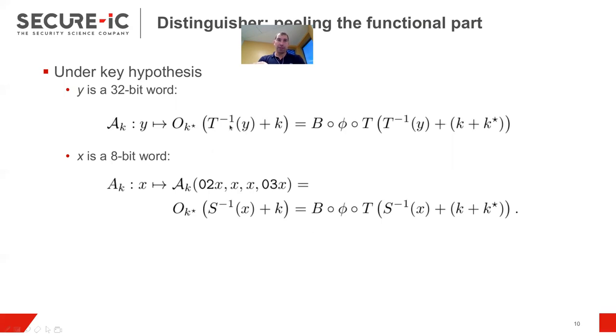So instead of taking the input as a Y, which is the image under the mix columns, we can just provide directly a byte here and map it to the image of the mix columns. So in which case, the function we need to assess becomes kind of clear because you see, we explicitly see the difference between the key guess and the correct key appears. And so if it is a good guess, there will be a simplification.